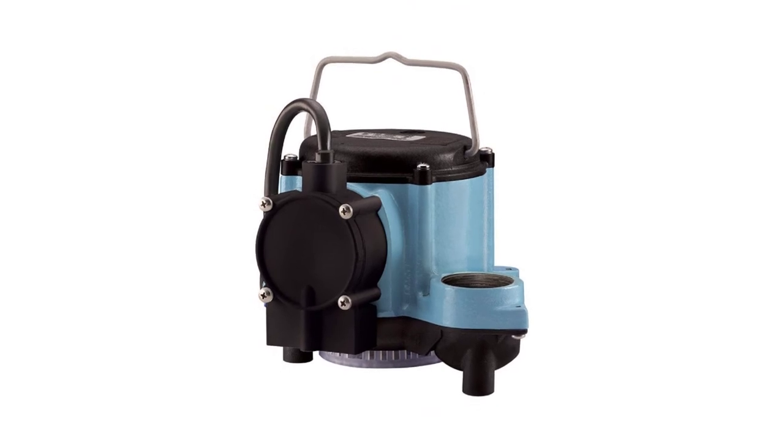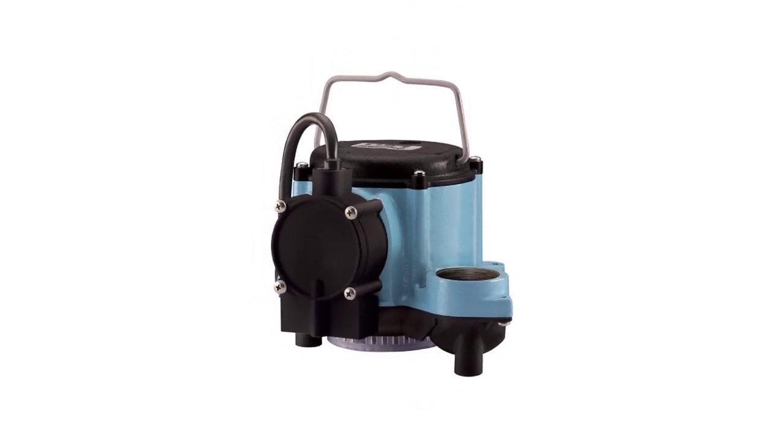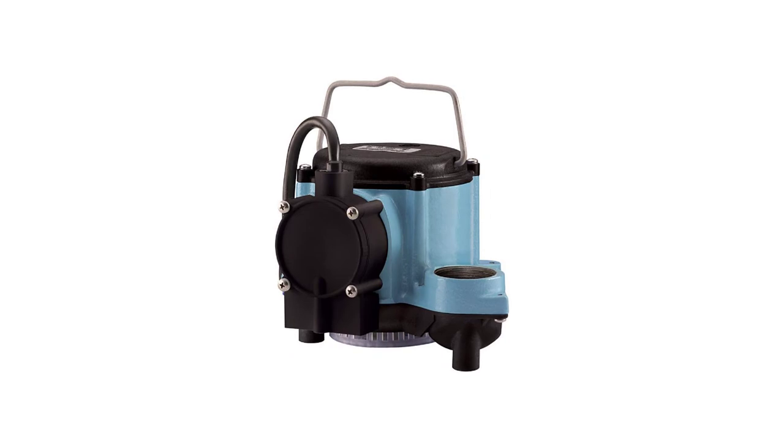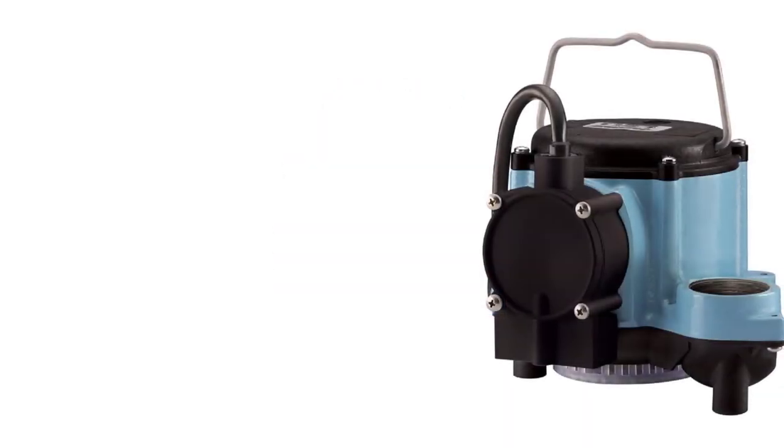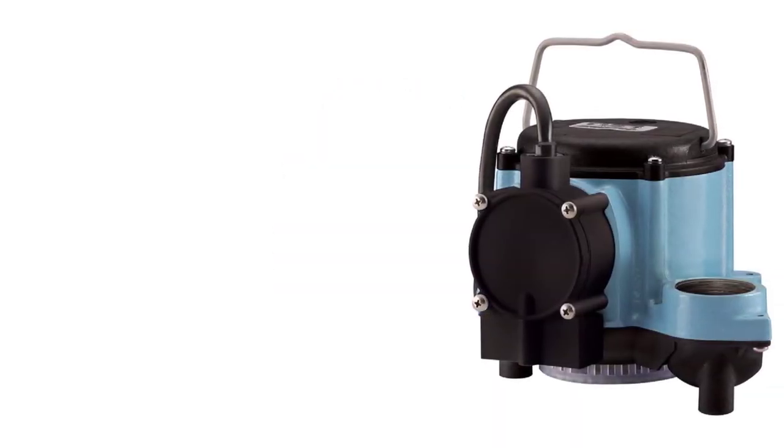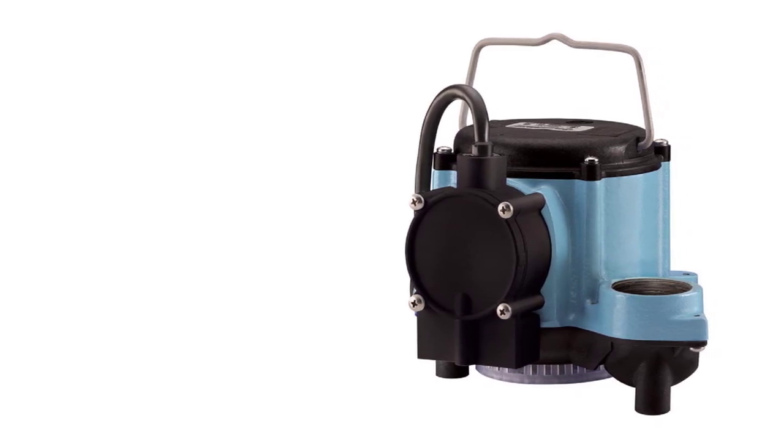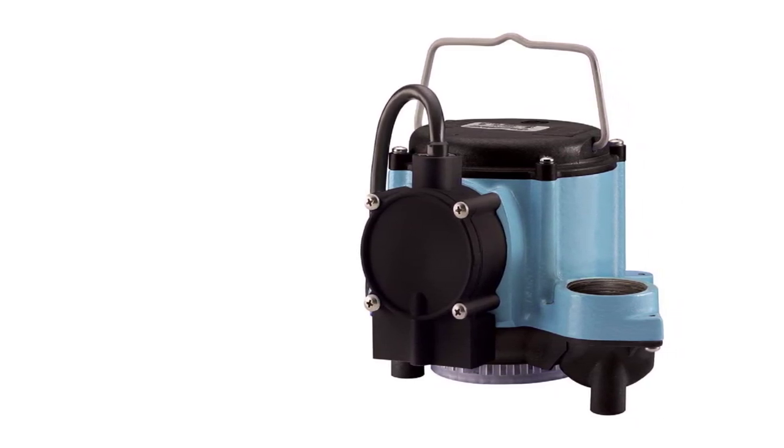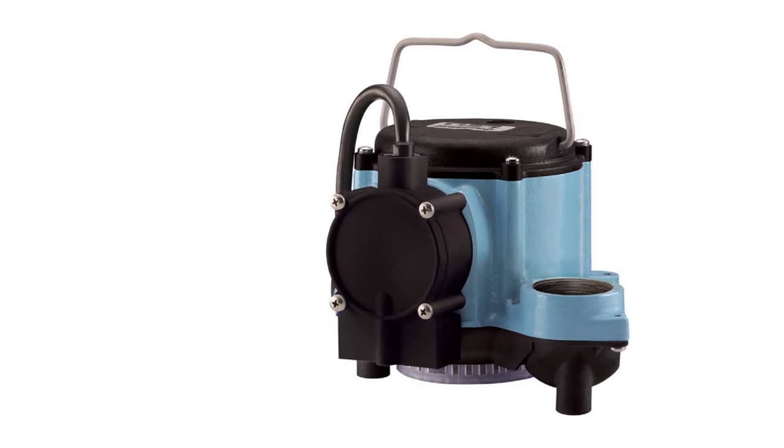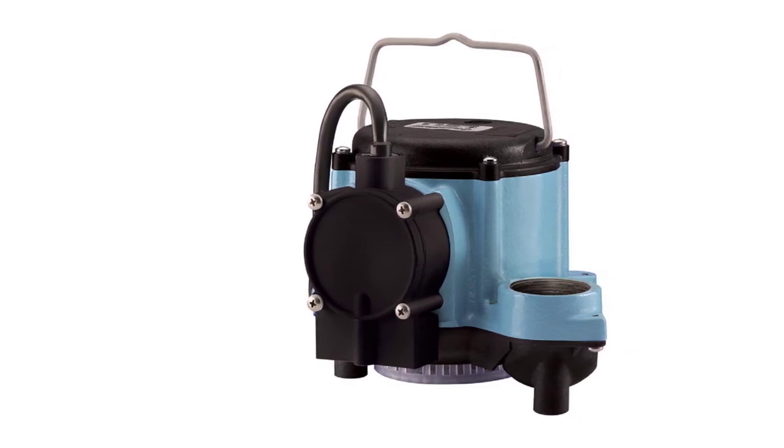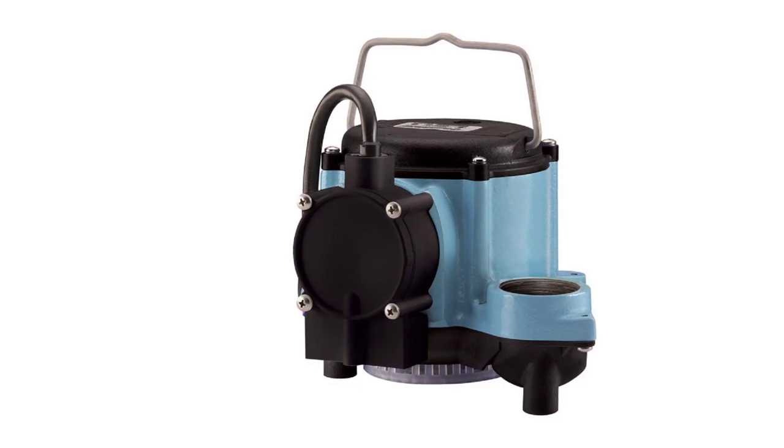The short height of Little Giant and integral diaphragm switch allow it to work in smaller basins and lower water levels. The integral diaphragm is located inside a lid. When the water rises to a certain level it triggers the switch. Therefore it activates the whole system.